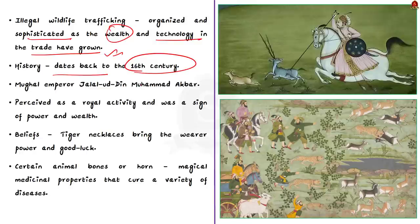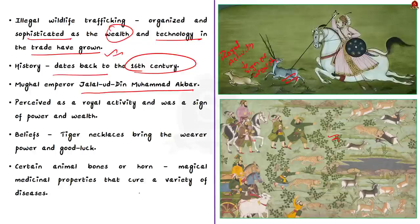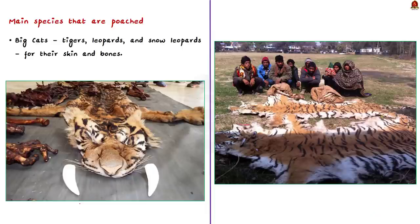The belief that tiger necklaces bring power and good luck, and that certain animal bones or horns have magical medical properties that cure diseases, has encouraged poaching in India, making it a huge trade. Now we will look at some main species targeted for illegal wildlife trafficking. Big cats — tigers, leopards, and snow leopards — are mainly poached for their skin and bones. Elephants are mainly poached for their ivory and tail hair, which are symbols of wealth and power.